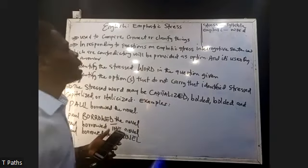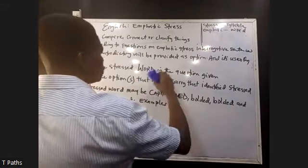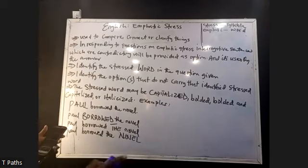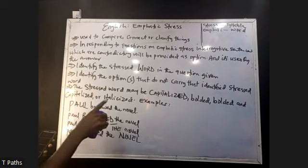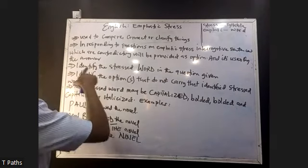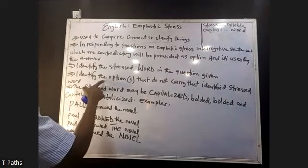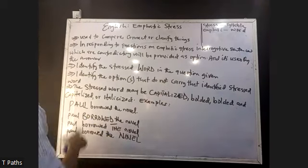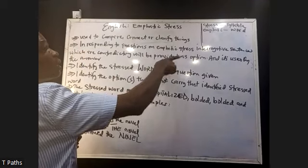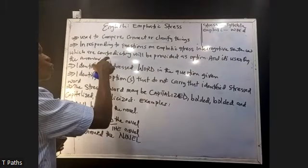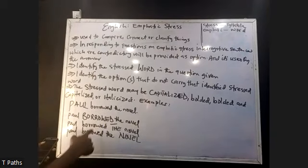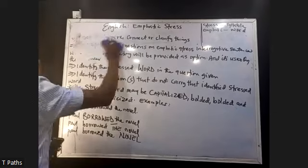So you can see emphasis attached to particular words in sentences. For us to get the correct answer anytime we face emphatic stress questions, we said: identify the stressed word in the given question, then identify the option that does not carry that identified stressed word. Because it's that option which does not carry the identified stress that is your answer. In responding to questions on emphatic stress, interrogative sentences which are contradictory will be provided as options — and the contradictory one is usually the answer.